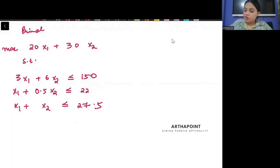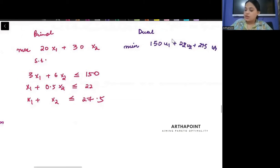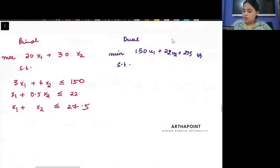But what happened when you wrote the dual? You wanted to minimize 150u1 plus 22u2 plus 27.5u3 subject to two constraints. The first constraint that we formulated was 3u1 plus u2 plus u3, and the second constraint we formed was 6u1 plus 0.5u2 plus u3.